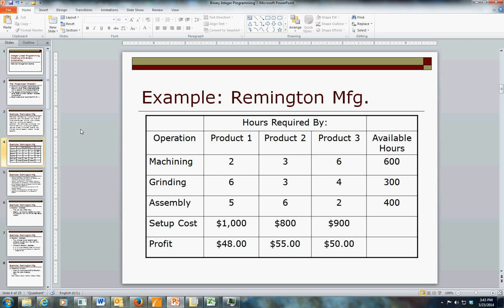What's different in this problem is that we have a fixed setup cost. If you want to produce product one, you've got to send people back to storage to get out the jigs and fixtures, bring them out, set them up, test them out, and turn on the production. So there's a fixed cost associated with the decision to make any product at all. And we have to figure out a way to deal with that.